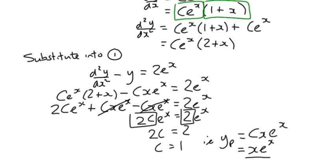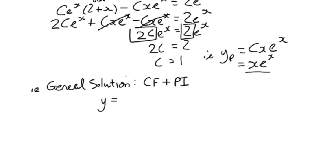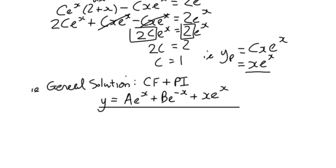We can now write the general solution, which is the complementary function plus the particular integral. We had Ae^x plus Be^(-x) as the complementary function, and xe^x as the particular integral, giving y equals Ae^x plus Be^(-x) plus xe^x. That would be the end of the solution if we didn't have any further information — but we do.